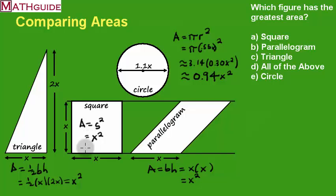Here's 1x squared, 1x squared, 1x squared. This is 0.94x squared. We could see that the 0.94 is less than the others. So it turns out that D is the correct answer. All three of these figures have a greater, just slightly greater area than the circle. So D is correct.